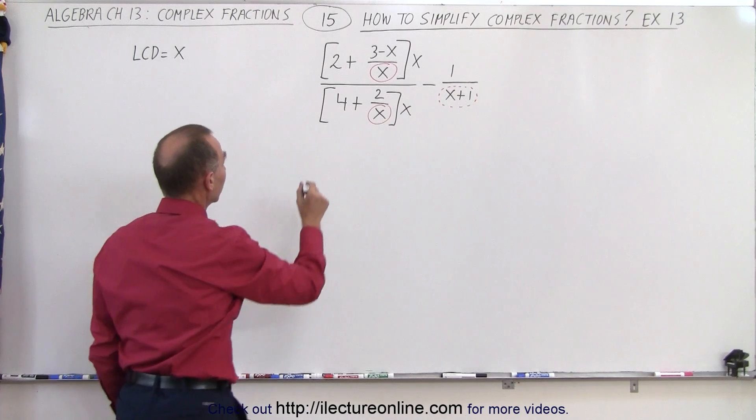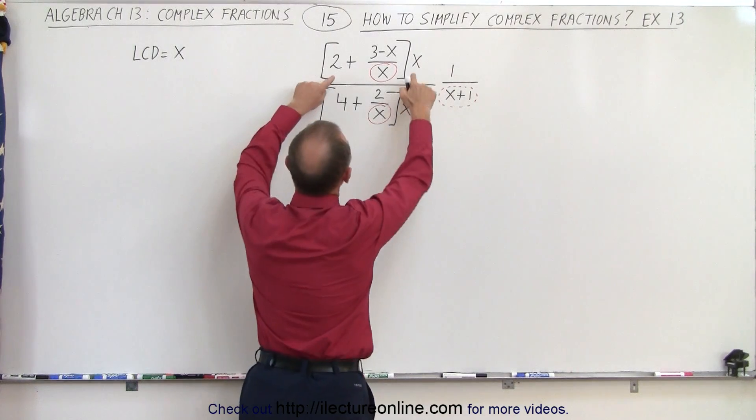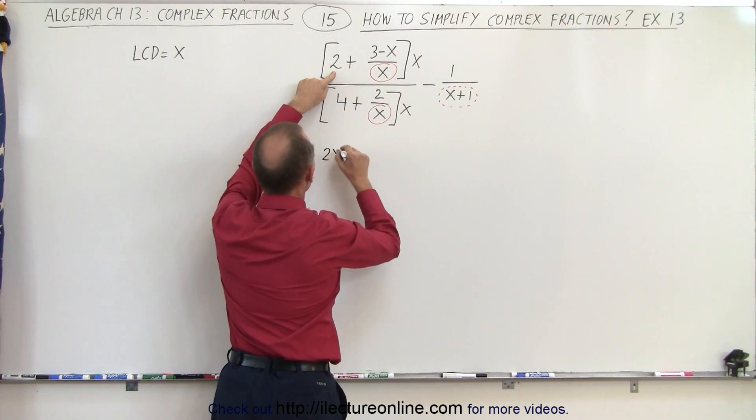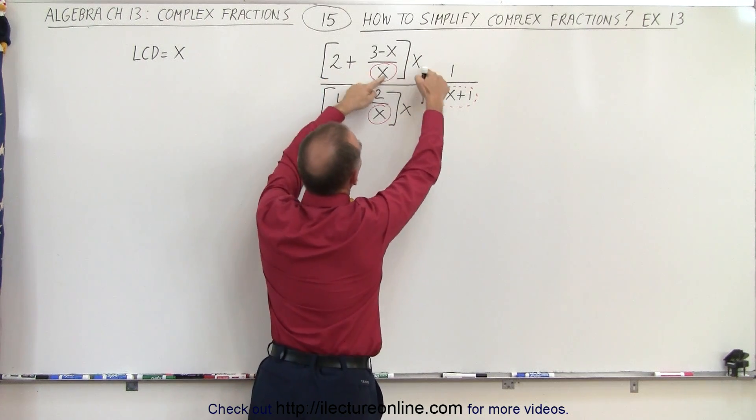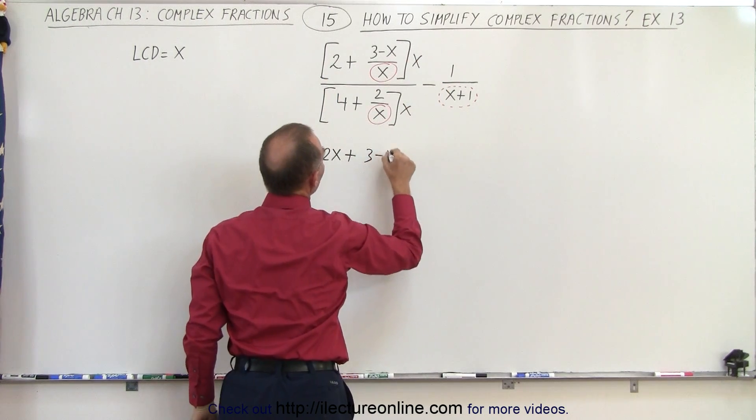When we do that we get the following. So this is equal to 2 times x plus we multiply these together, the x's cancel out and I'm left with 3 minus x.